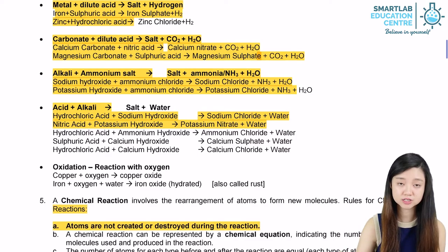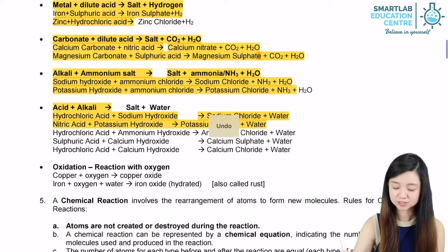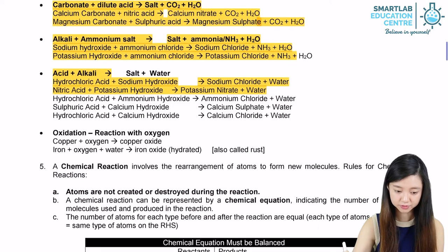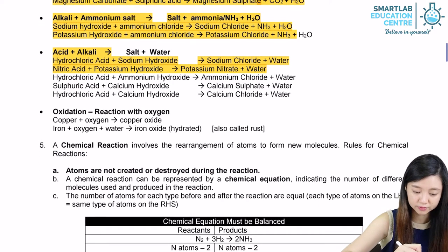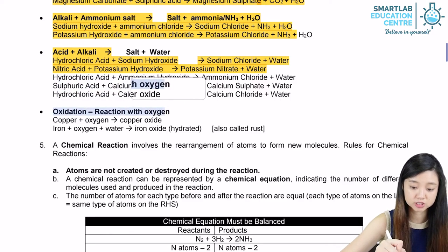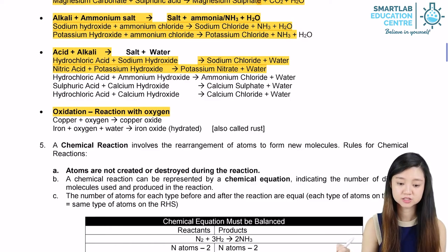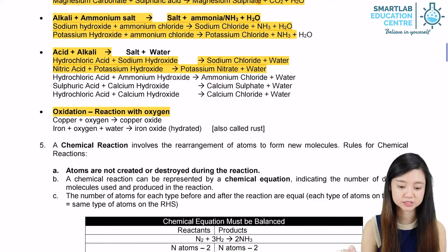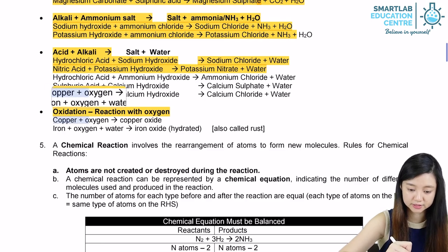There are many other reactions in chemistry. One is called oxidation — a reaction with oxygen. For example, copper plus oxygen gives you copper oxide.